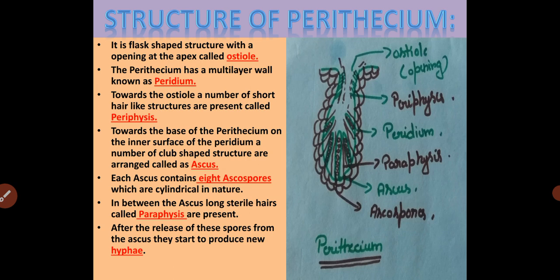Structure of the perithesium: The perithesium is a flask-shaped structure with an opening at the apex called the ostiole. The outer covering of the perithesium is called the peridium. Towards the ostiole, a number of hair-like structures called periphyses are present. Towards the base of the perithesium, on the inner side of the peridium, a number of club-shaped structures called asci are present, each comprising 8 ascospores at maturity. In between the asci, sterile hair-like structures called paraphyses are present. After the release of the spores from the ascus, they germinate and produce new hyphae.